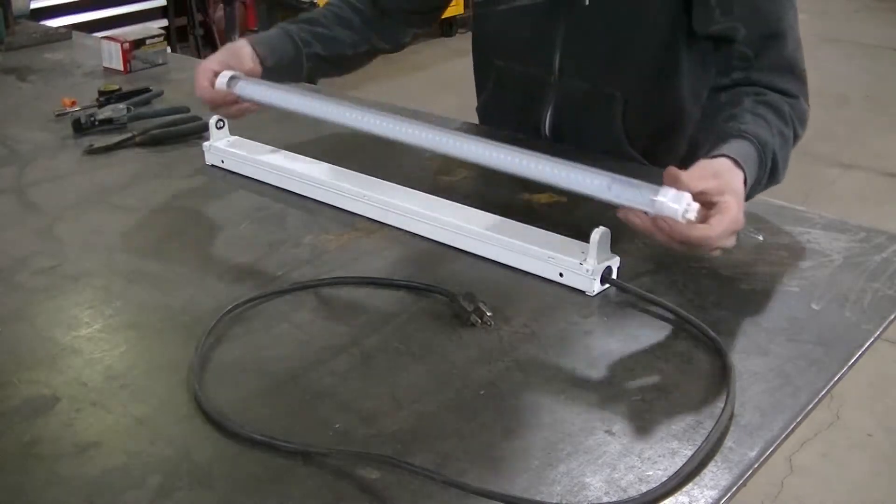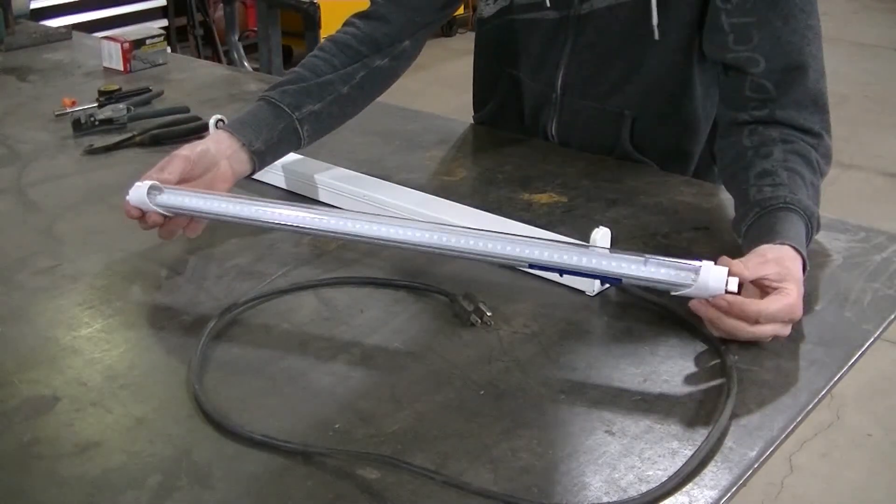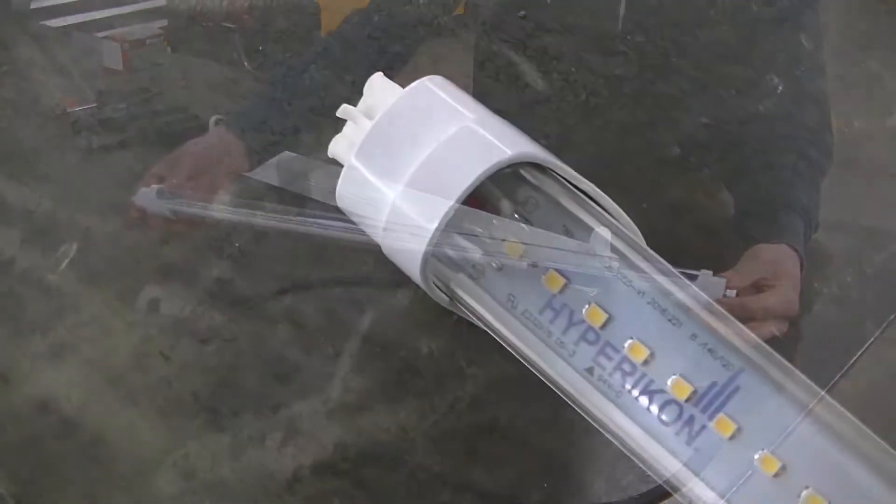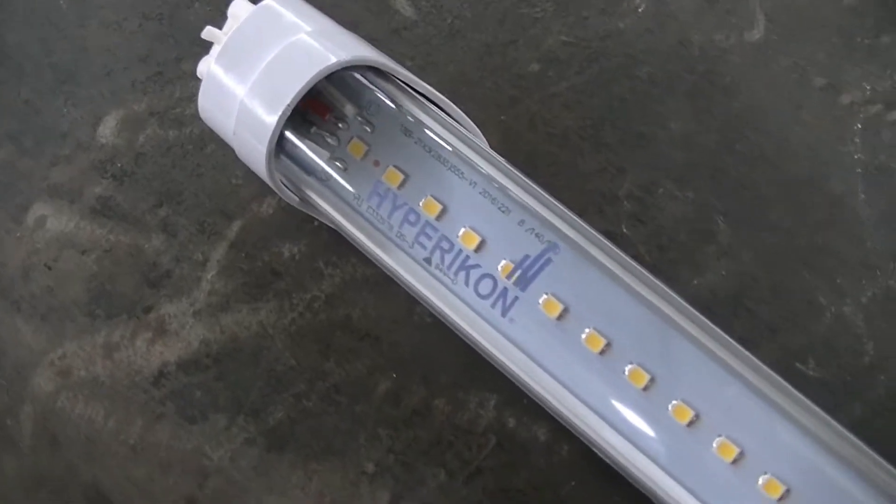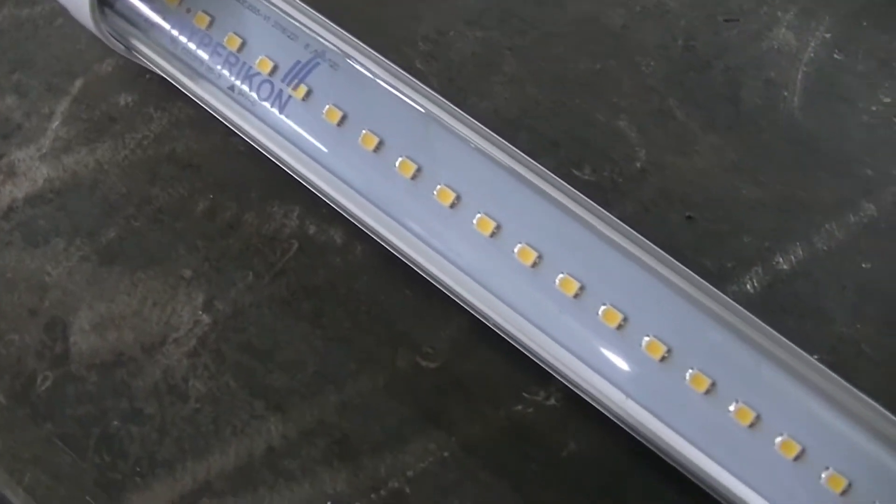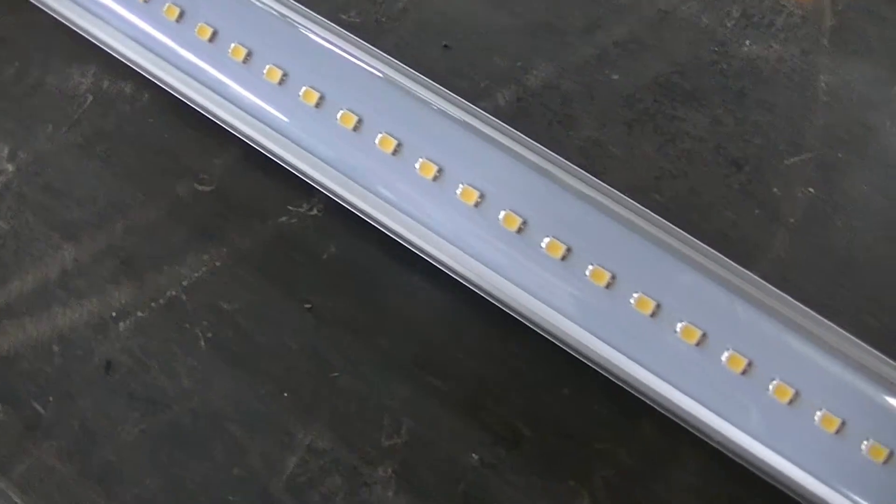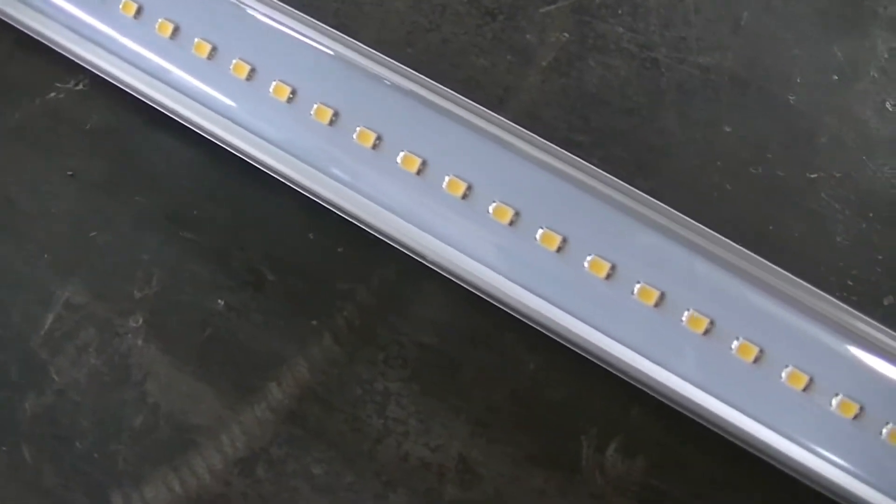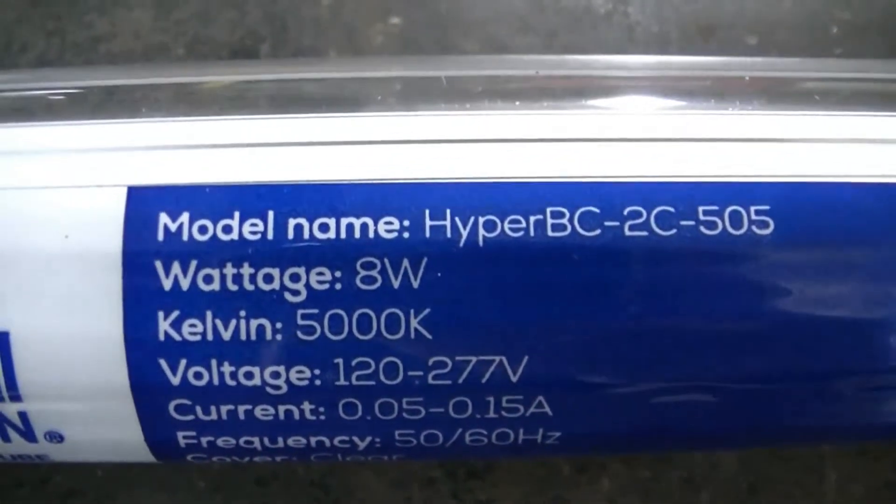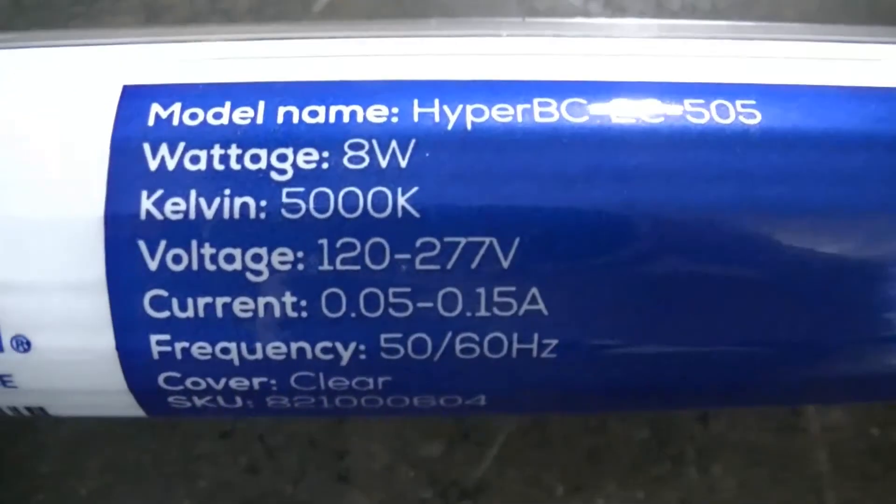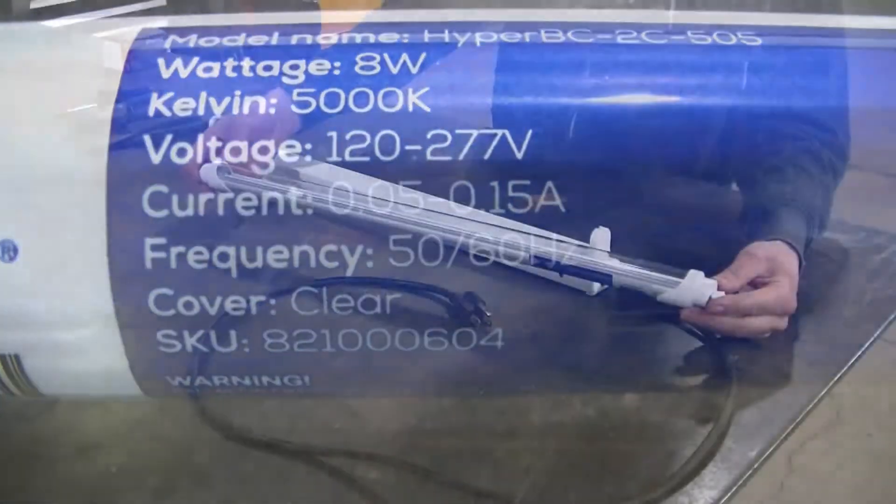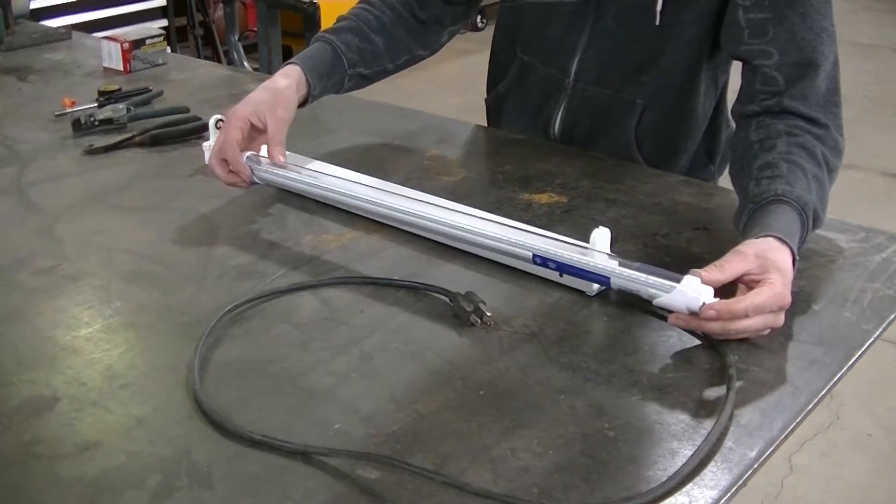Actually going to be using this tube right here, and this is from Hyper Icon. It is a 5000K, 8 watt T8, and it's got the clear lens on it.